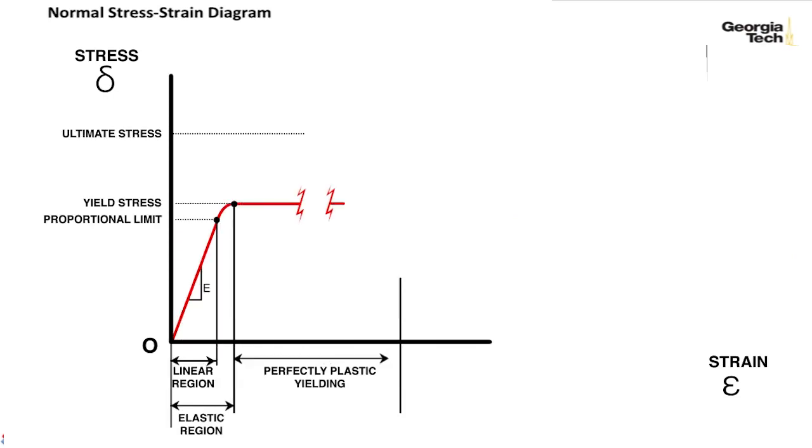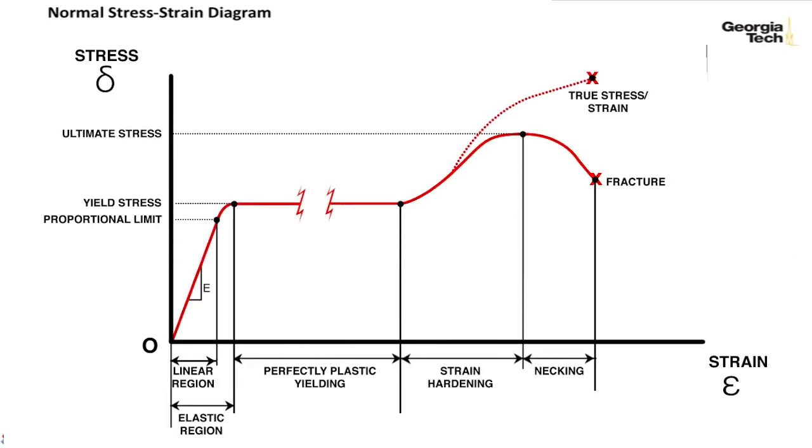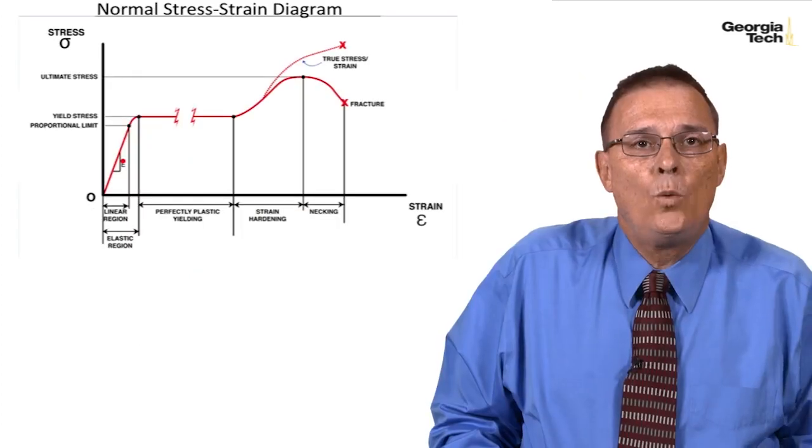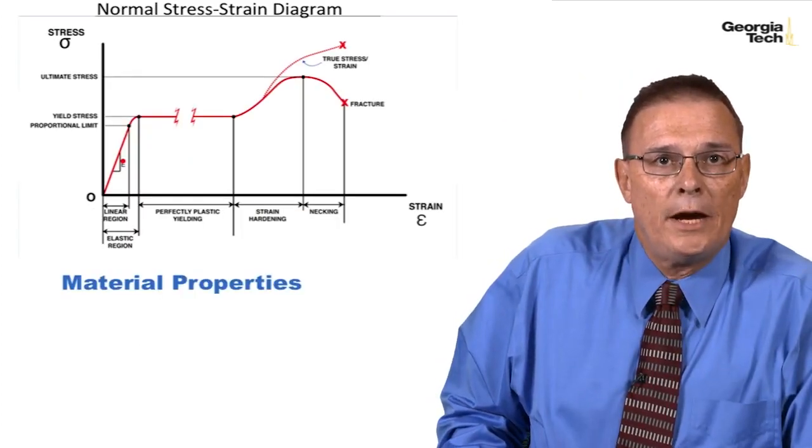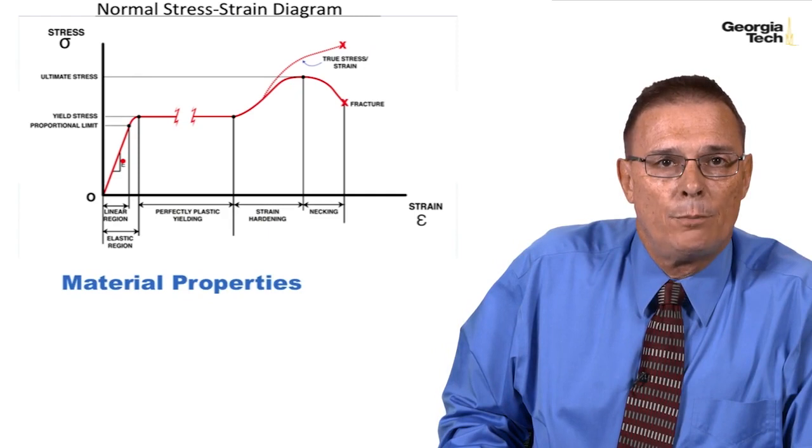So here is our normal stress-strain diagram for a ductile material, typical ductile material that we came up with last time. With this stress-strain diagram, we can start to look at material properties.